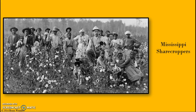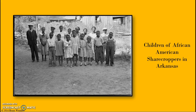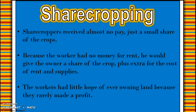Even though they were free, sharecroppers were still enslaved to that land because they would go into debt — just like in our simulation, they didn't make any money. They would go further and further into debt every year and had to keep working that land, making it a system very similar to slavery. They received no salary — just a small share of the crops. Because they had no money for rent, they would have to give the owner a share of the crops plus extra for the cost of rent and supplies, and they rarely made a profit, typically going further and further into debt.